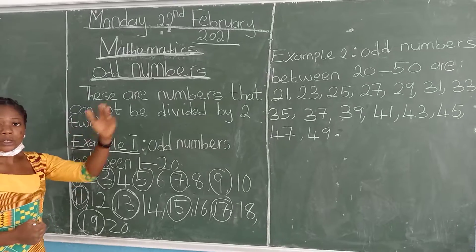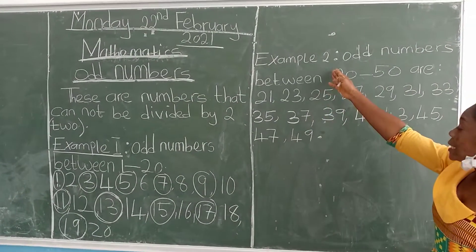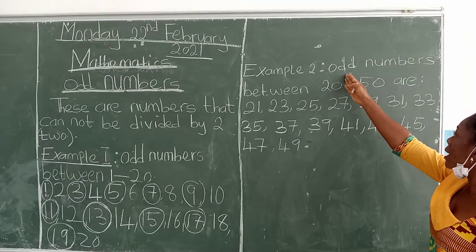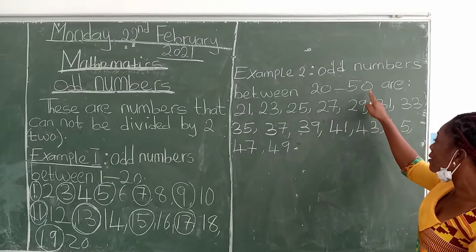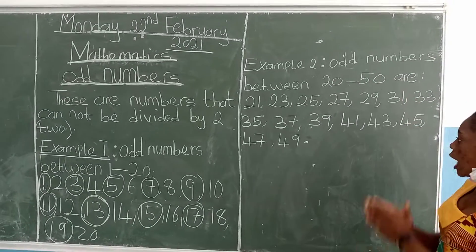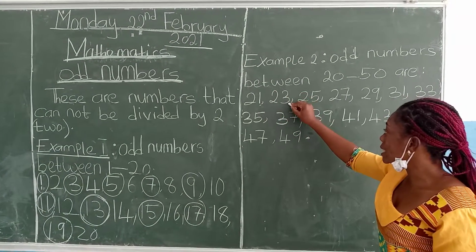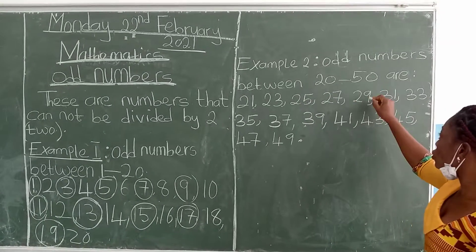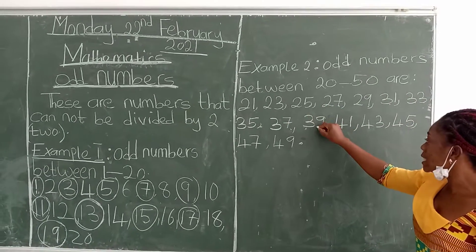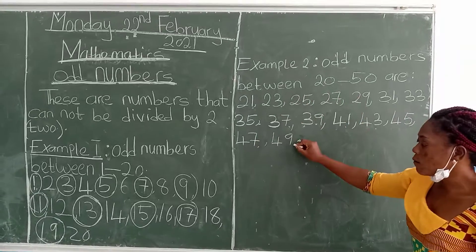The next example we are going to see is odd numbers between 20 and 50. Odd numbers between 20 and 50 are: 21, 23, 25, 27, 29, 31, 33, 35, 37, 39, 41, 43, 45, 47, and 49.